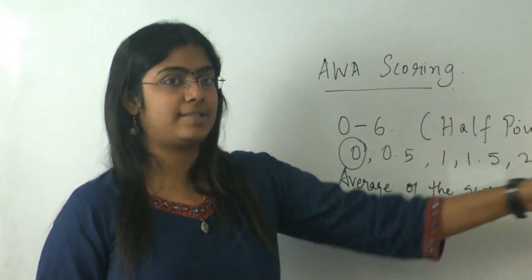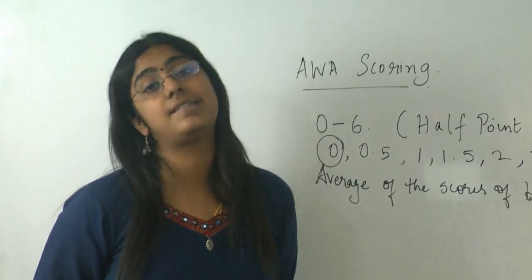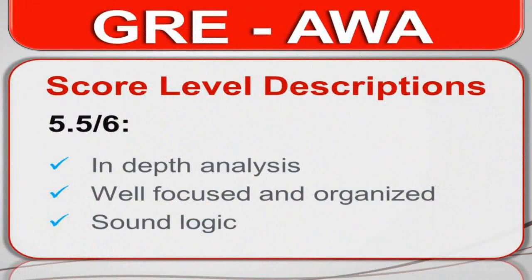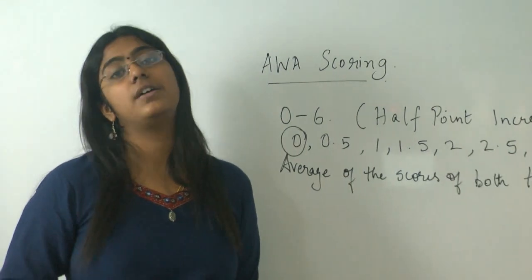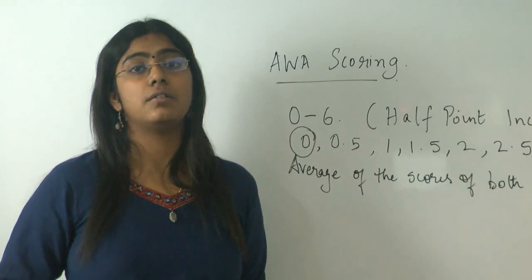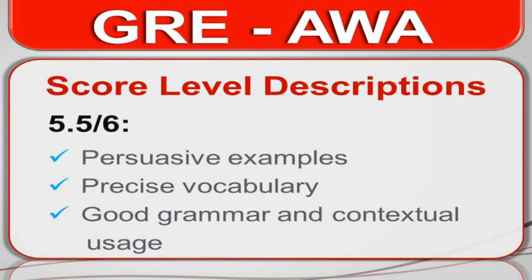So let's start from the best possible score. That's 6. 6 means you've done very well. You've been excellent. So 5.5 and 6, it means that your analysis is very sound. It's in-depth. Essay is well focused and organized. The logical part of it is uncontested. Your examples are very persuasive. And you have precise vocabulary. Now remember you needn't have excellent vocabulary but a precise vocabulary is what you need. Along with your vocabulary is the grammar part and your contextual usage.